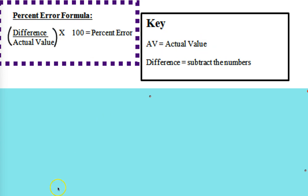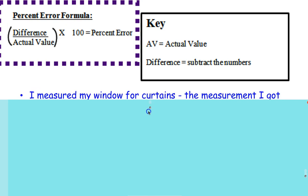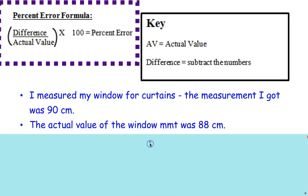Let's go ahead and do a practice question. Let's imagine that I measured my window for curtains and the measurement that I got was 90 centimeters wide. However, the actual value of the window measurement was 88 centimeters wide. What's my percent error?